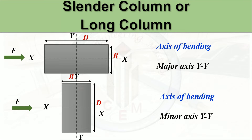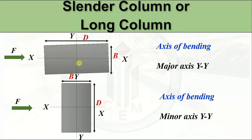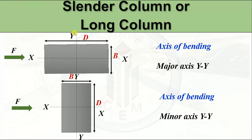Let's have a look at what is the major axis and what is the minor axis of a column. Consider this column — this is your XX axis and this is your YY axis. This is the width of the column and this is the depth of the column. When the force is applied in this direction, the column tends to bend accordingly. Here, the axis of bending is the Y axis, and the Y axis is the major axis, while the X axis is the minor axis. The axis which is perpendicular to the longer dimension is called the major axis, and the axis which is parallel to the longer dimension is called the minor axis.